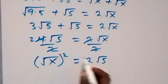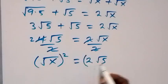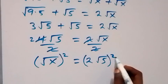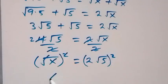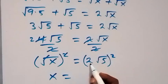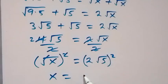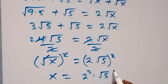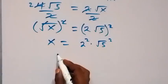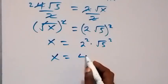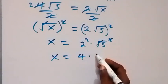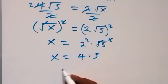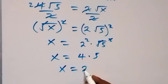Squaring both sides to eliminate the square root: square cancels square root, so x equals 2 squared times root 5 squared, which is 4 times 5, so x also equals 20.